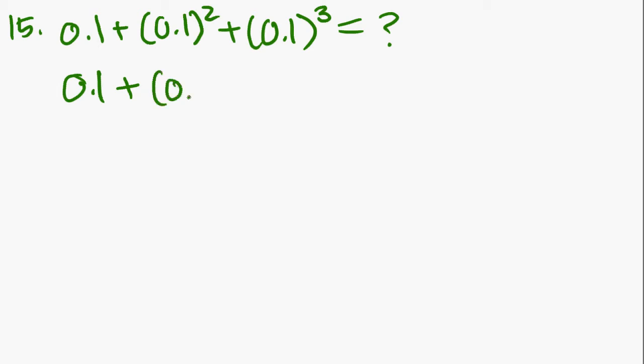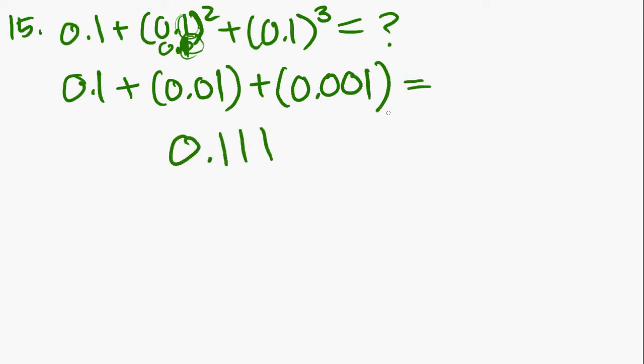0.1 squared is 0.01. There's two spaces after the decimal because if you take 0.1 and multiply it by 0.1, there's going to be two units after the decimal. So you know there's two units after the decimal plus 0.001. You add these up and what do you get? You get 0.111. And that is answer B.